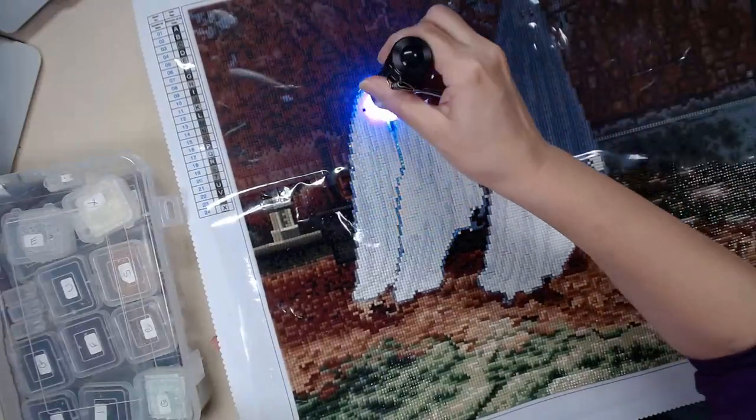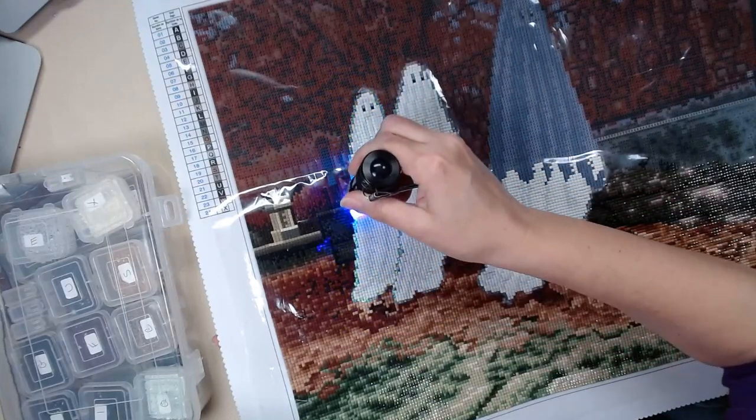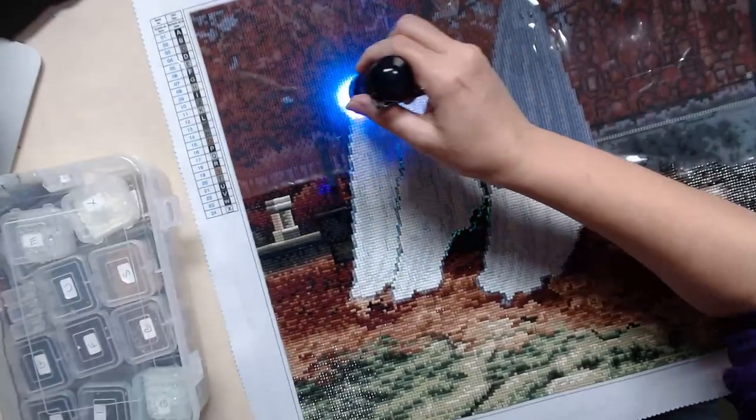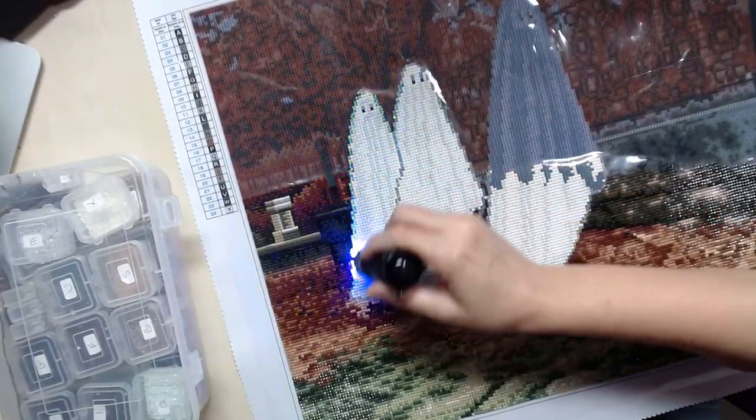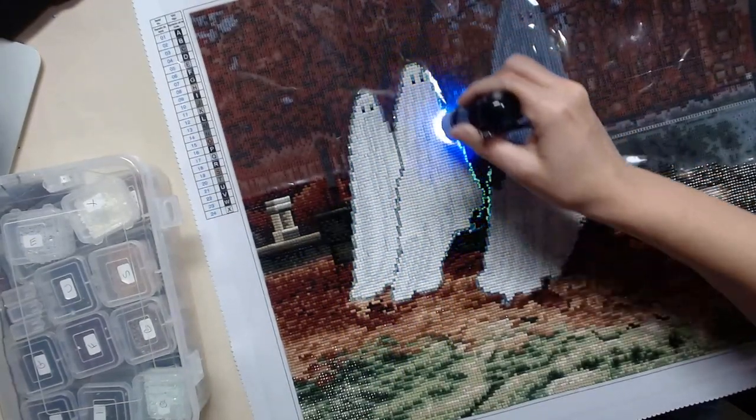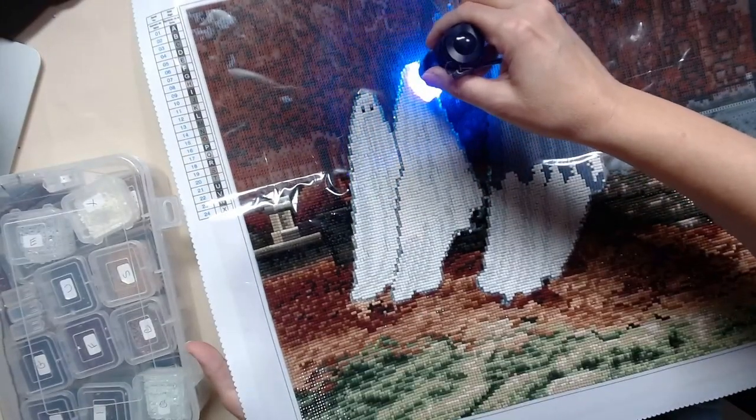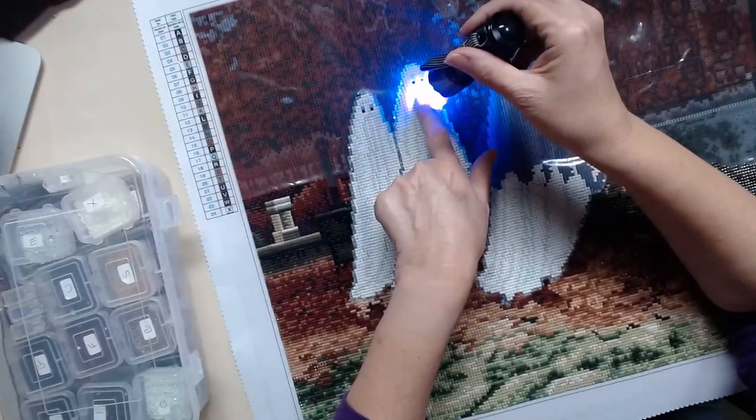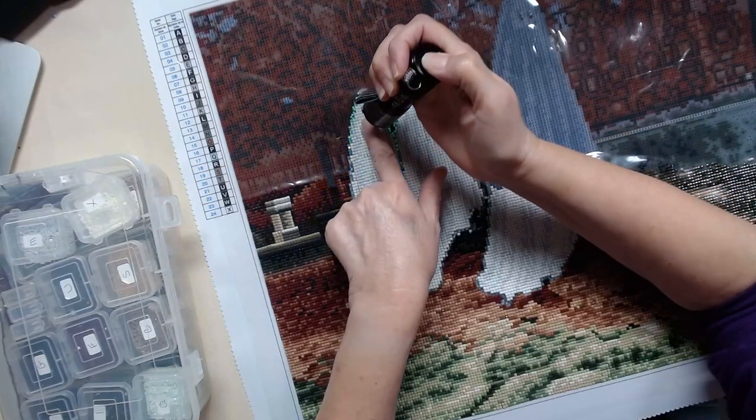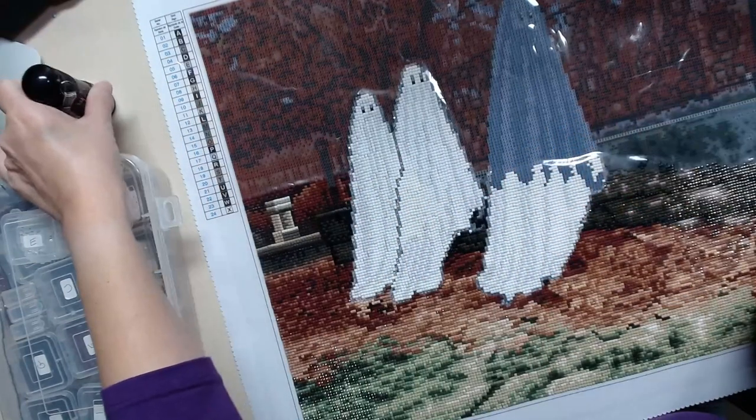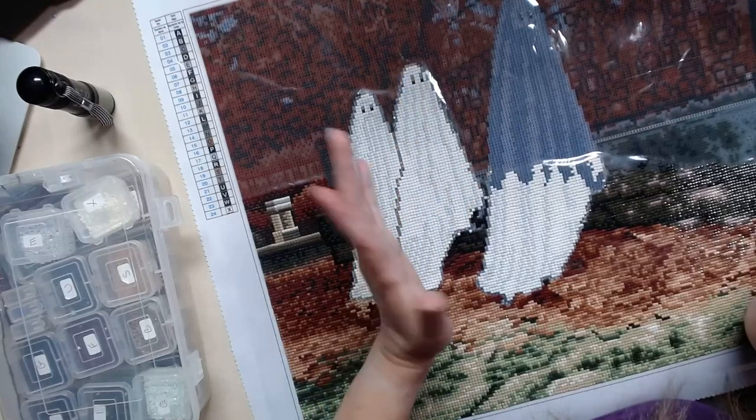This is what I'm working on, Three Ghosts by Make Market. What I've done so far is made these ghosts glow in the dark. In the eyes, those are round drills, glow in the dark round drills from a Jack-O-Lantern by Make Market painting. They fit no problem, right in there along with the squares.